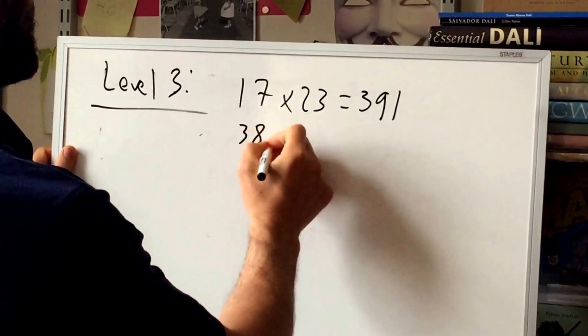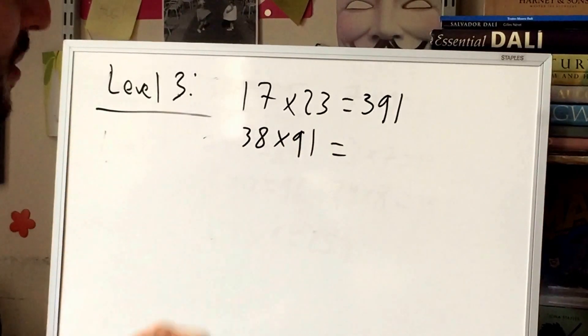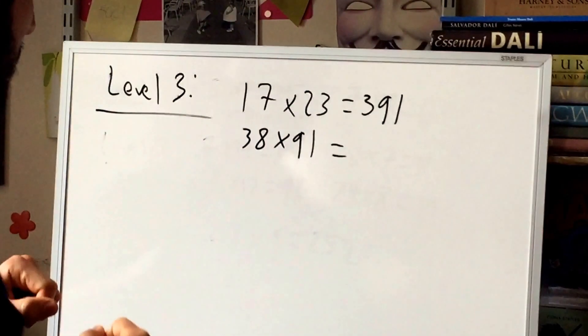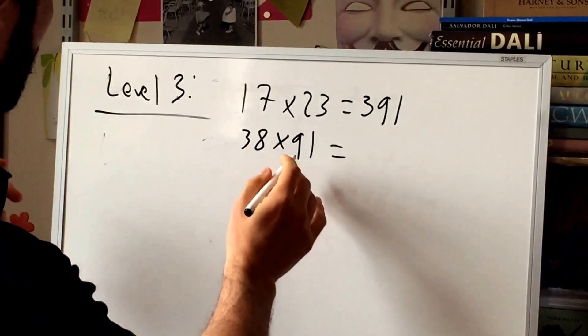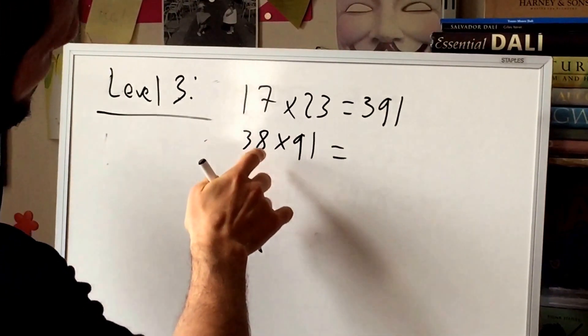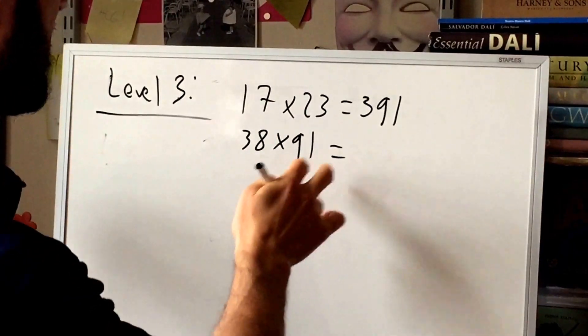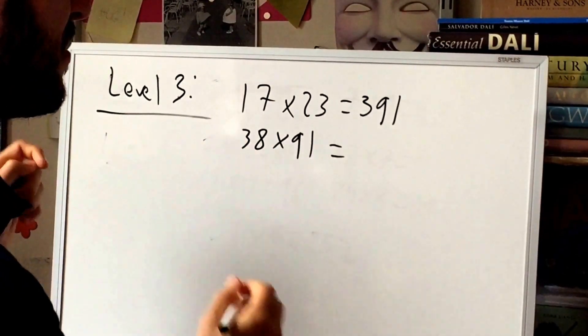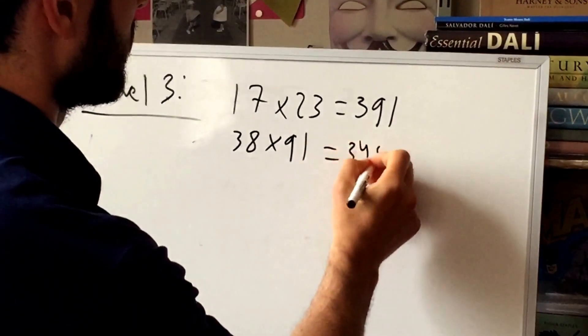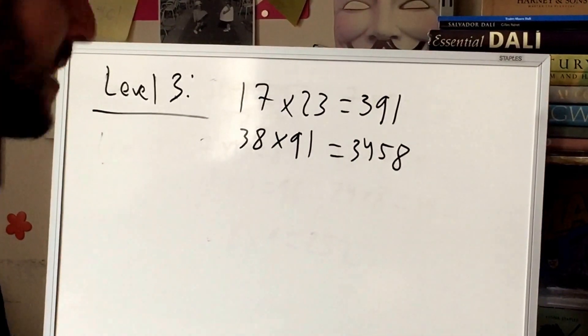Let's try thirty-eight times ninety-one. Not an easy problem to do, but given enough time, you should be able to get it. So let me think about it right here on the fly. So we'll have 2700, that's the 90 and the 30, 2700 and 720, so that's 3420 and another 38. So 3420 and another 38, that should be 3458. Now if I mess that up, sorry, but I think it's right.